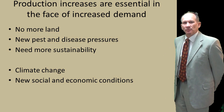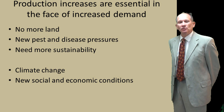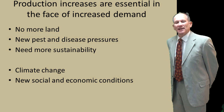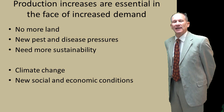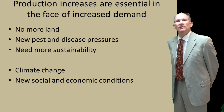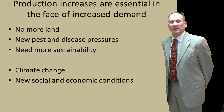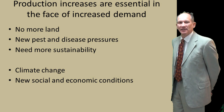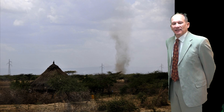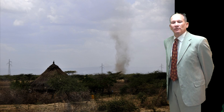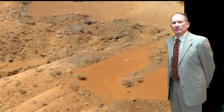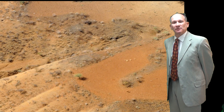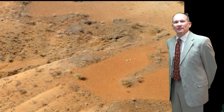So what do we need to deliver as breeders, and how can genomics and genetics help? Production increases are essential in the face of increased demand, new pest and disease pressures, no more available land, and a need for greater sustainability — we need to produce the food that populations need without damaging the planet, and that's in the face of climate change and new social and economic conditions. How can we avoid things like dust devils removing fertile soil or water erosion? These are all challenges that breeders face from abiotic stresses, and they will be exacerbated by climate change.